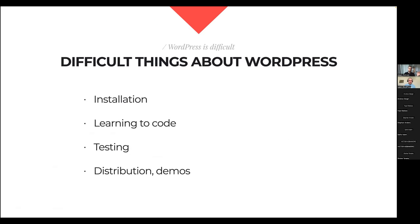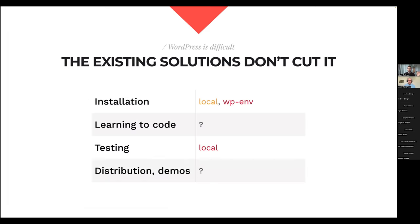So in WordPress, it's difficult to install it, it's difficult to get started with learning how to code and how to use it, it's difficult to test changes from colleagues, and it's difficult to distribute and demo my code. There are some solutions that improve the situation — like Local and WPN — and maybe they make installation easier on a local machine. Maybe they help with testing, but I'm not going to embed Local or WPN on my homepage, I can't use it on my phone, and I need to install something.